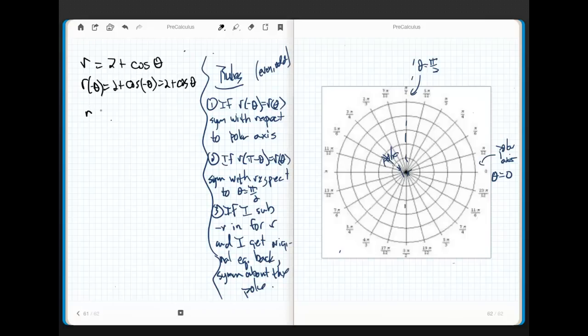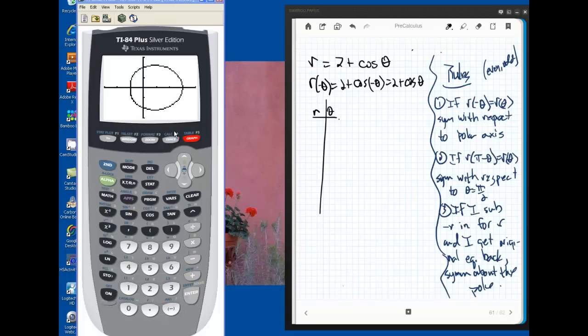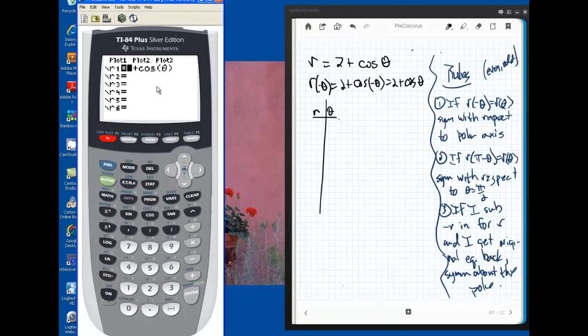Now, if I wanted to, I could do the whole r and theta and plug everything in and do all that. But ladies and gentlemen, we have calculators. We have technology. Look at this. Look at what I put in. I put in 2 plus cos theta, and when I go to graph this, look at what I've got. Now let's look closely at this, because what it almost looks like is kind of this egg-shaped thing right here.